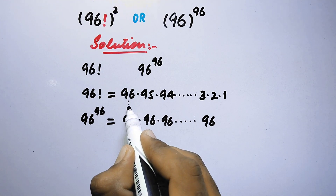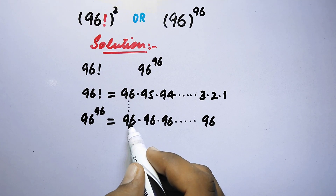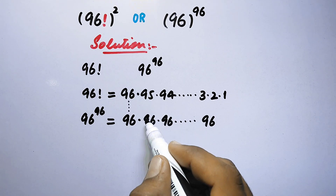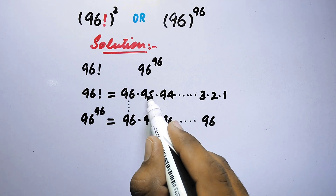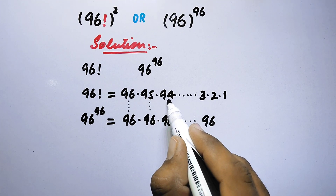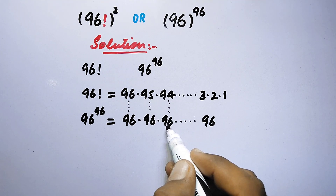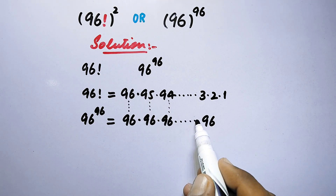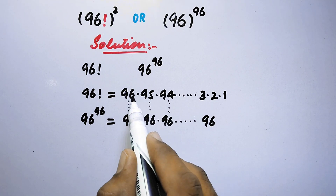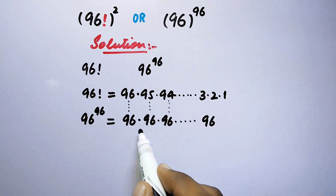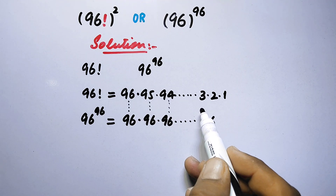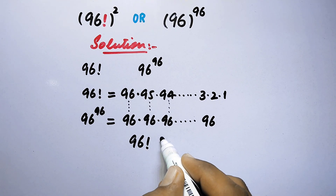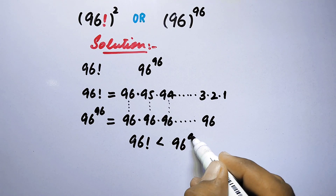Comparing the first value: 96 versus 96 — those are the same. But the second term is 95 versus 96, which is smaller. Each subsequent term of the factorial series is smaller than the corresponding 96. So we can easily see that the product of the factorial terms will be less than the product of the constant series. Therefore 96 factorial is smaller than 96 to the power 96.